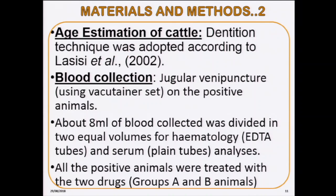Age estimation was by dentition technique. Blood collection was by jugular venipuncture, only from the positive animals. About 8 ml of blood was divided into two equal volumes — one for hematology and the other for serum. The positive animals were randomly divided into two groups: Group A were treated with the first drug and Group B were treated with the second drug.